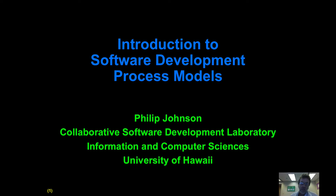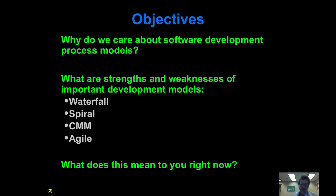Aloha and welcome to this whirlwind tour of software development process models. The idea in this screencast is we're going to quickly go over four of the most important process models of the last 50 years — or I should say, the archetypal canonical process models. If you know these four, you'll see most other process models as being some variant of them.